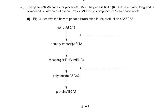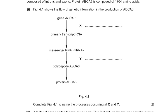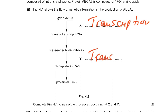Part D: The gene ABCA3 codes for protein ABCA3. The gene is 80,000 base pairs long and is composed of introns and exons. Protein ABCA3 is composed of 1704 amino acids. In the flow of genetic information for production of ABCA3, process X is transcription — from DNA to pre-mRNA — and process Y is translation — from messenger RNA to polypeptide.